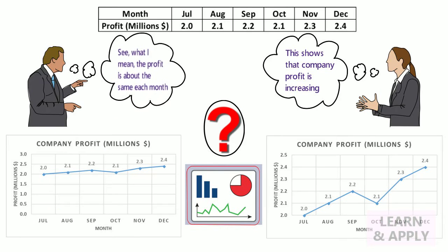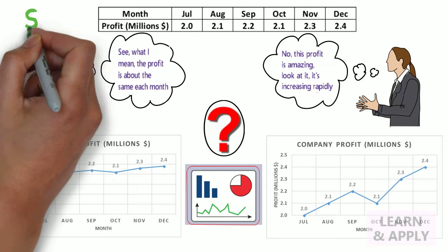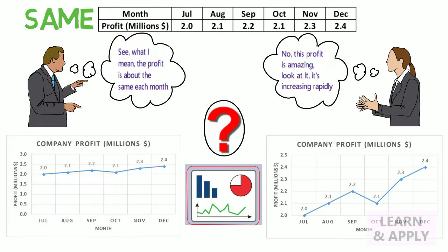Looking at the graph, the first person will say, see, what I mean, the profit is about the same each month. Whereas, the second person will say, no, this profit is amazing. Look at it, it's increasing rapidly. Both of these charts are based on the same information, but they look widely different. What is going on?